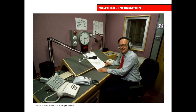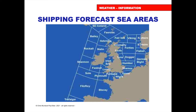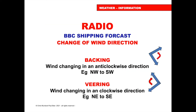The shipping forecast is broadcast covering specific areas — if you look at somewhere like FitzRoy, it's a huge area, and the whole forecast is delivered in three and a half minutes. To do this, they use specific language. Wind direction change is either backing — changing anti-clockwise, for example northwest to southwest — or veering — changing clockwise, for example northeast to southeast. That's what backing and veering mean in the shipping forecast.